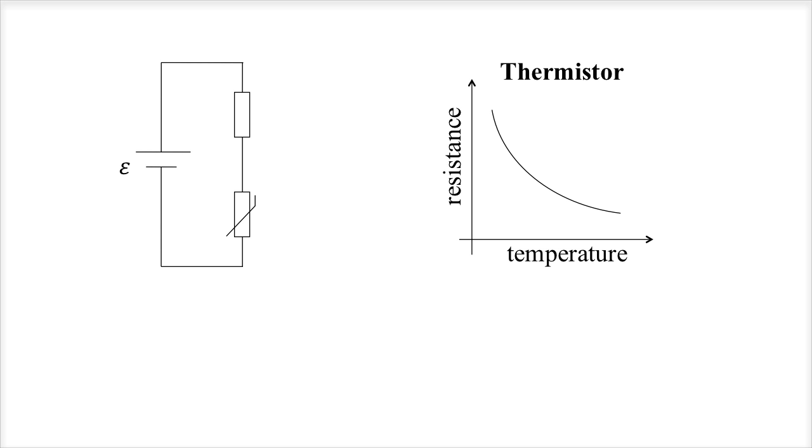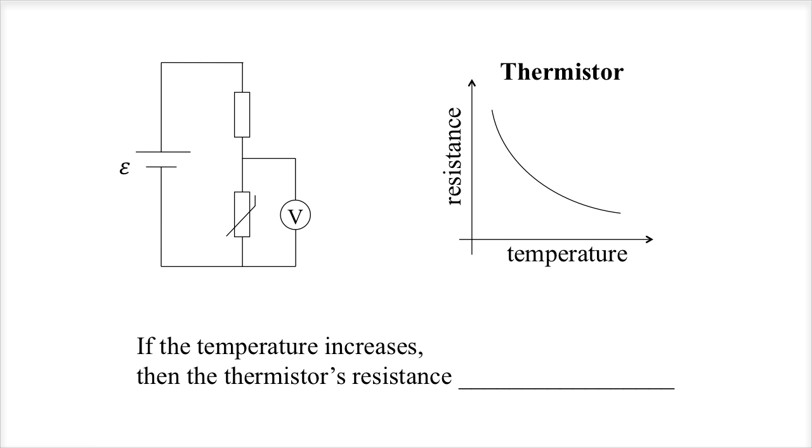Let's play this out. We're going to connect the voltmeter across the thermistor so we measure its voltage or potential difference. If you increase the temperature, what happens to the thermistor's resistance and what happens to the reading on the voltmeter?